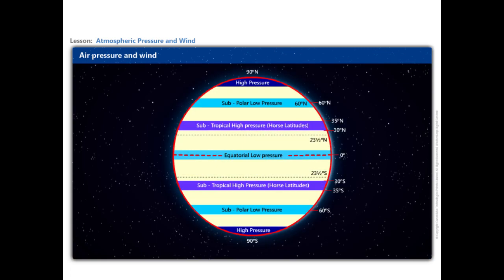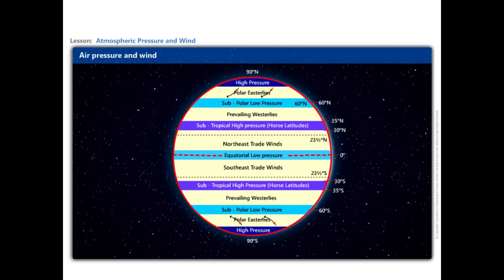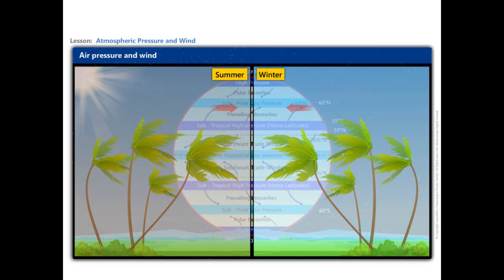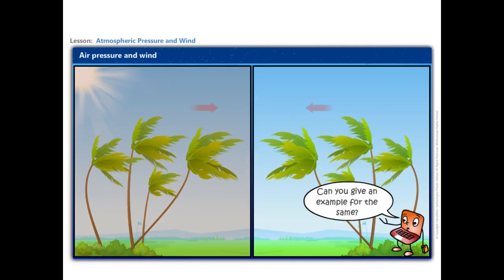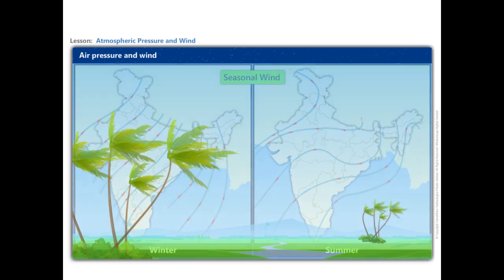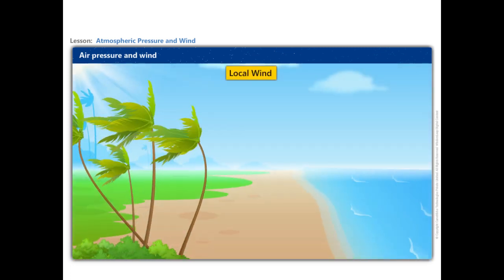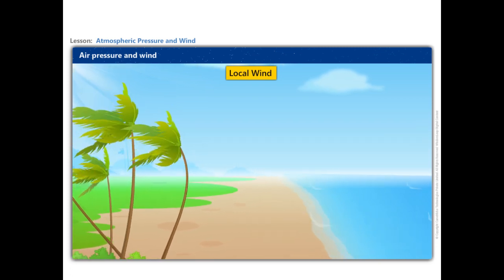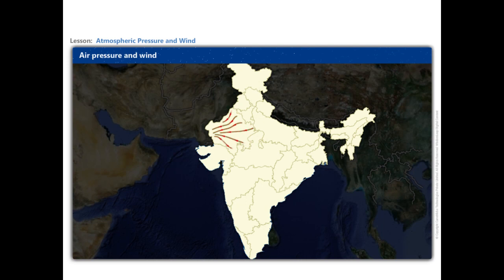There are some permanent winds that blow constantly throughout the year in a particular direction. The winds blow from high pressure belts to low pressure belts. The trade winds, westerlies, and easterlies are the permanent winds. Some winds change their direction in different seasons — these are known as seasonal winds. The monsoon wind that blows over India is an example of a seasonal wind. Winds that blow only during a particular period of the day or year in a small area are known as local winds. Land and sea breezes on a coastal area are examples of local winds. The hot and dry local wind that blows in the northern plains of India is known as the Loo.